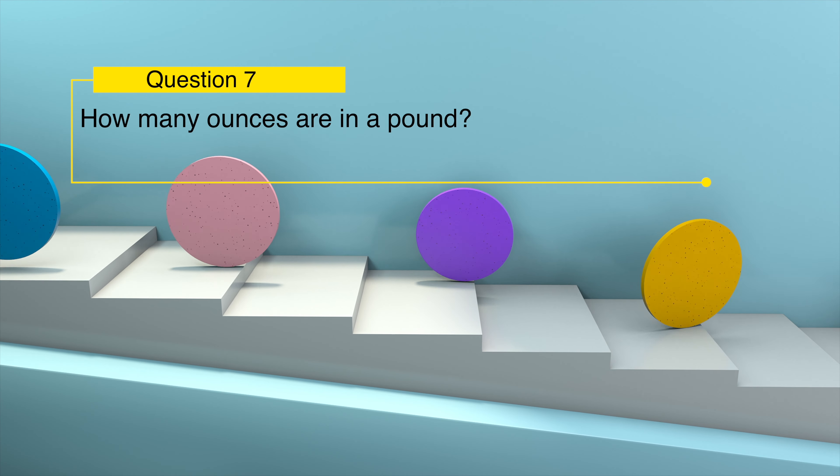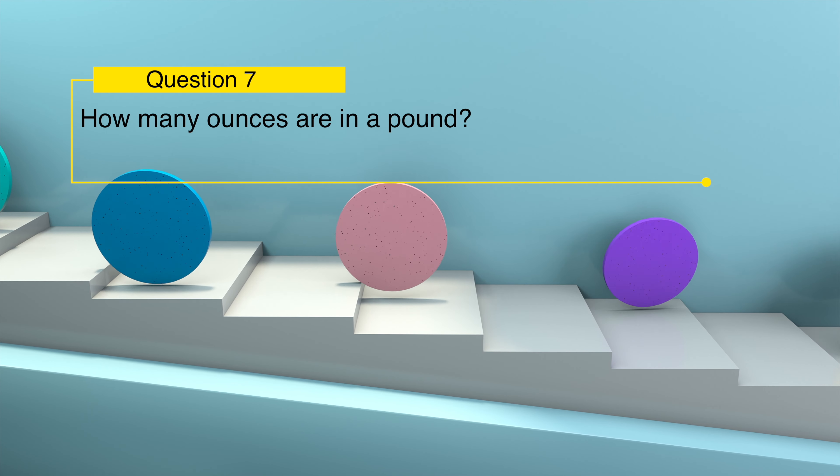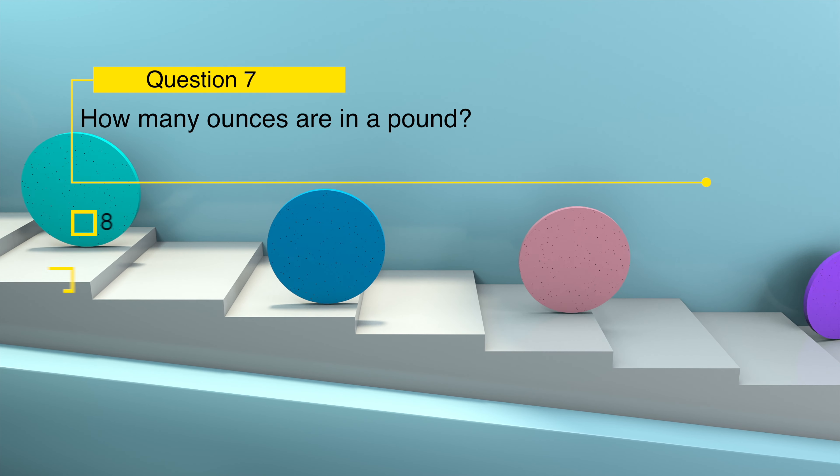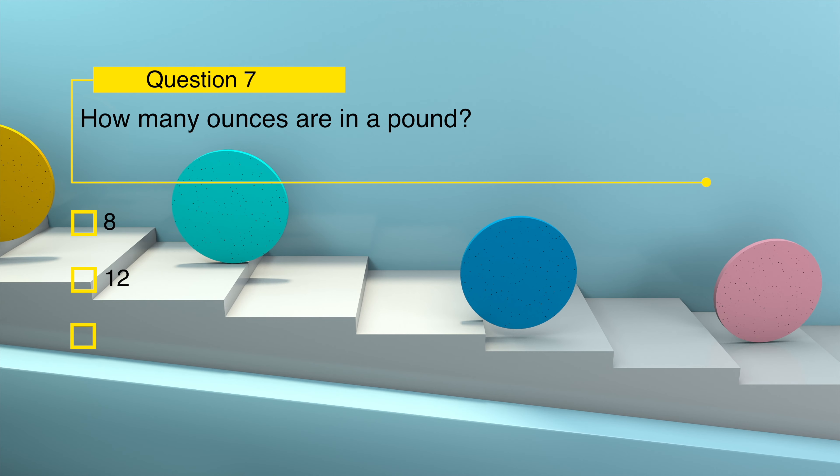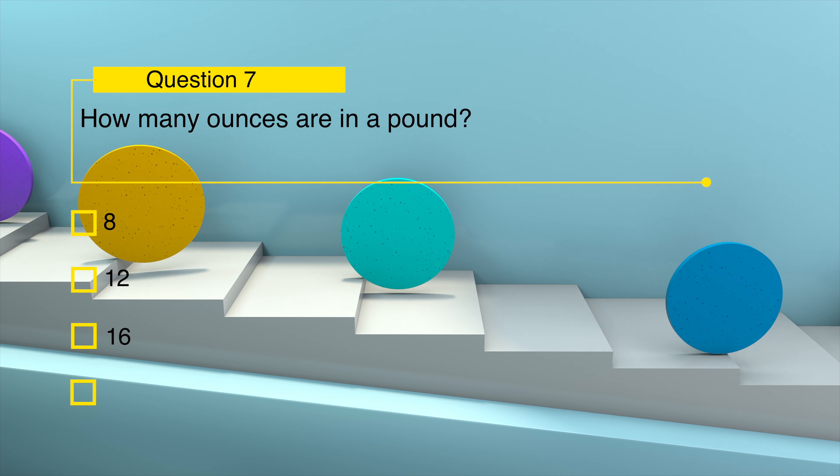How many ounces are in a pound? 8, 12, 16, or 24?